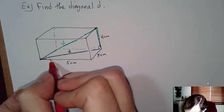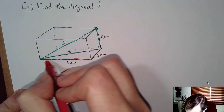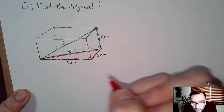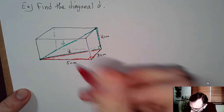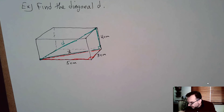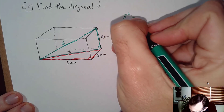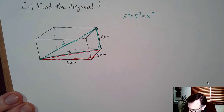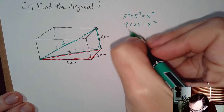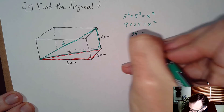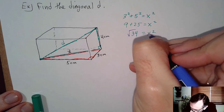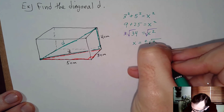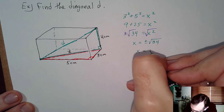Looking at the bottom of the box, I can form a red right triangle where I know all the sides. For that red triangle the two legs are 3 and 5, and the hypotenuse x is unknown. Applying the Pythagorean Theorem: 3 squared plus 5 squared equals x squared, so 9 plus 25 equals x squared, giving 34 equals x squared. Taking the square root of both sides — don't forget the plus or minus — we get x equals plus or minus square root of 34. We choose the positive value: square root of 34.